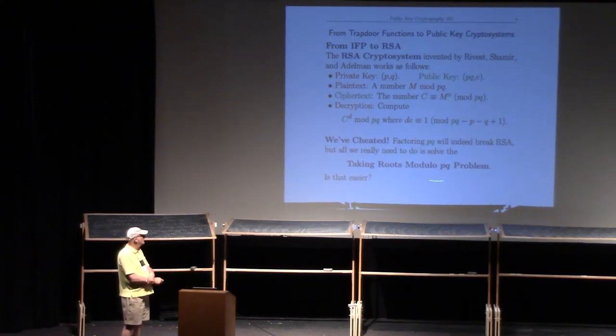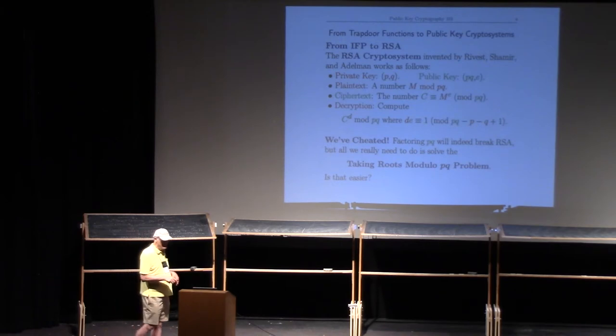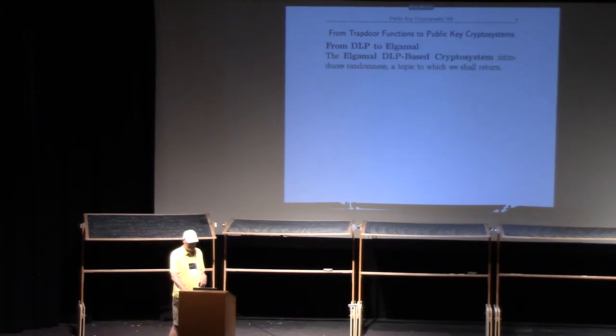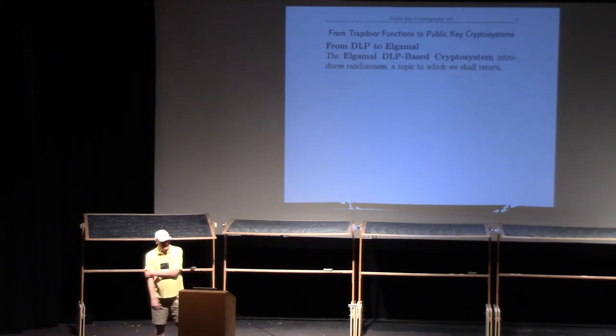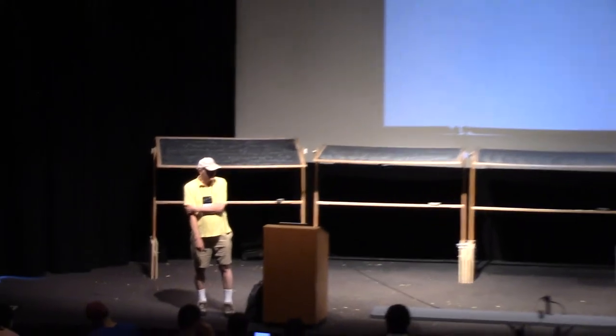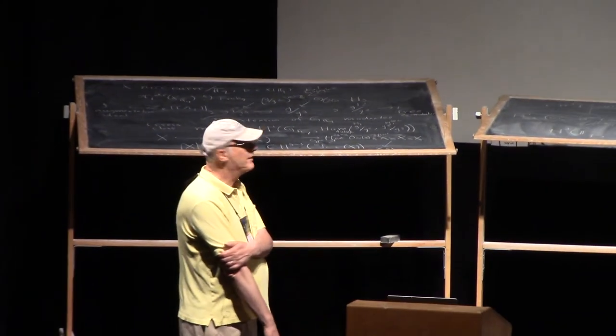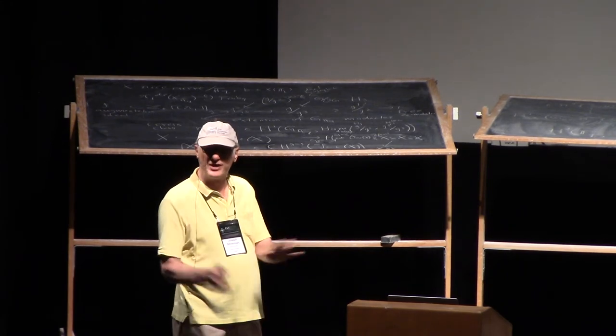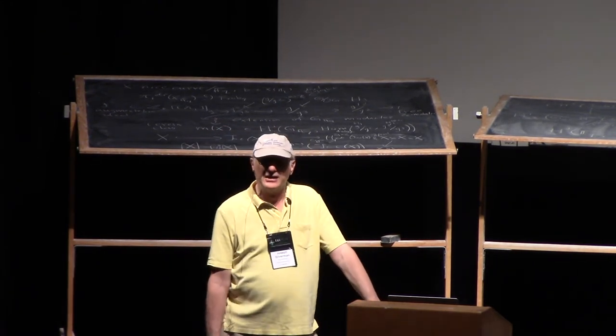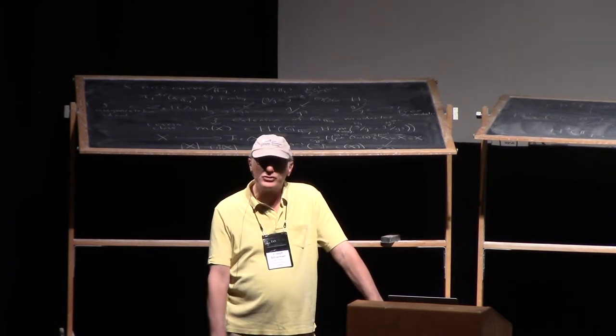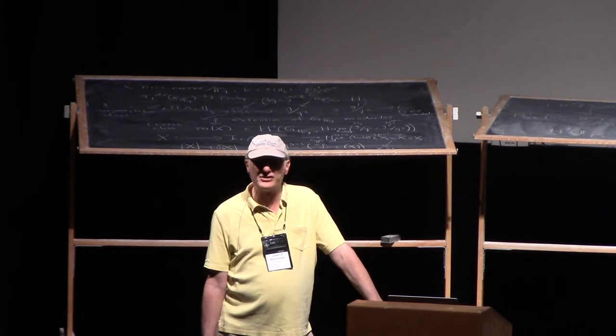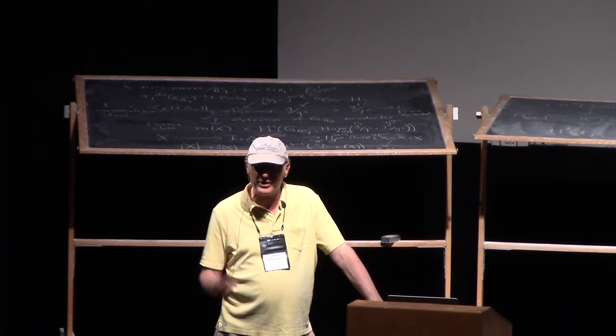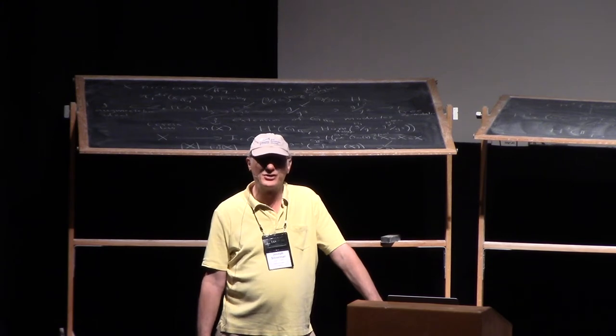As far as we know, in general the only way to do that is to actually find P and Q. But it might be a little easier. How about the Algamal system, which is based on the discrete log problem? This introduces some randomness. Almost all secure cryptography relies on having a source of randomness.